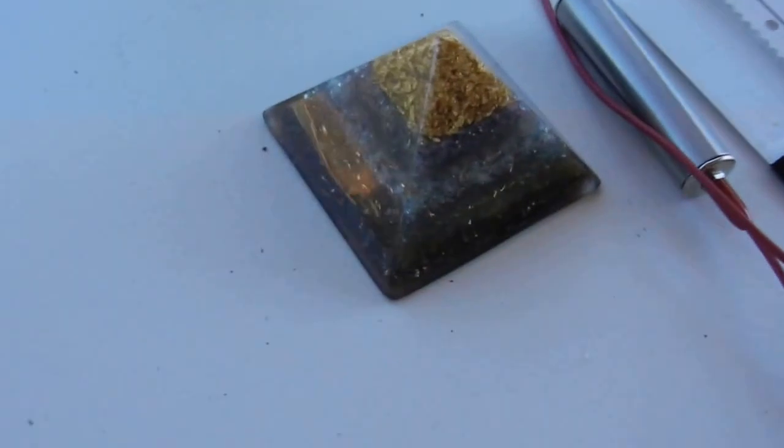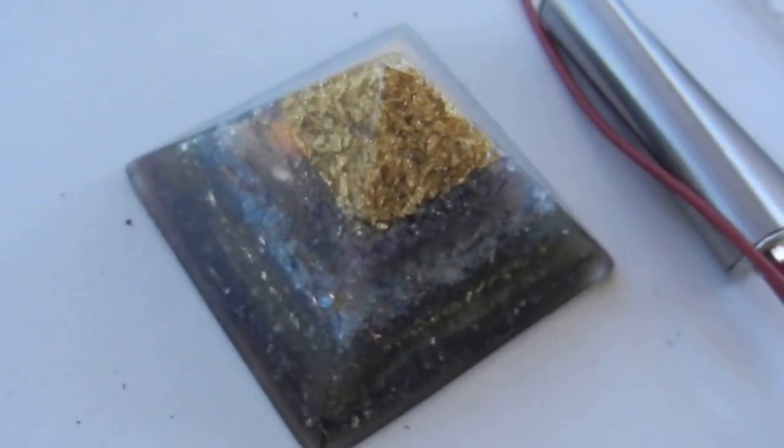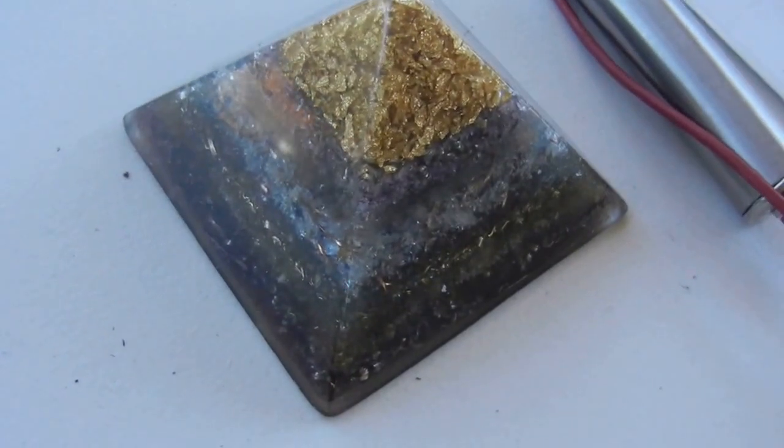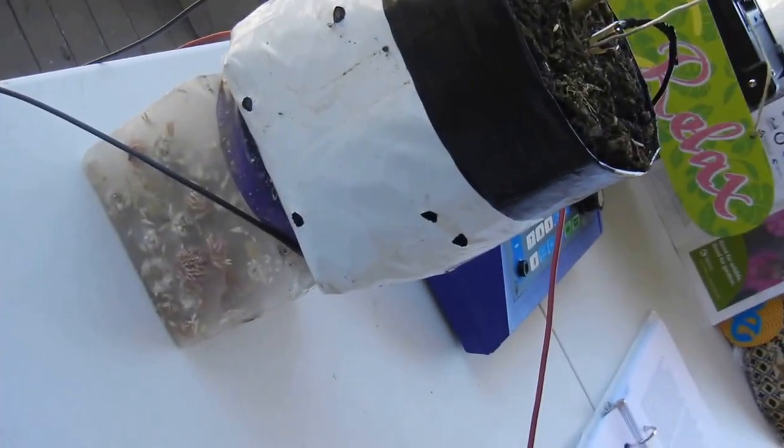Anyway, that's a nice little organite pyramid. I use that to help dissipate negative energy near the plants. That is also a piece of organite that plant is sitting on, that little purple thing.